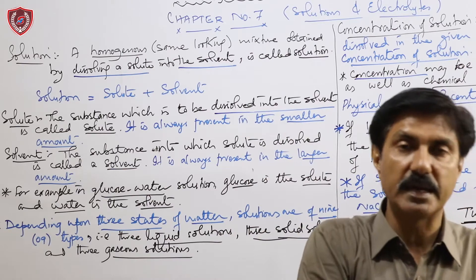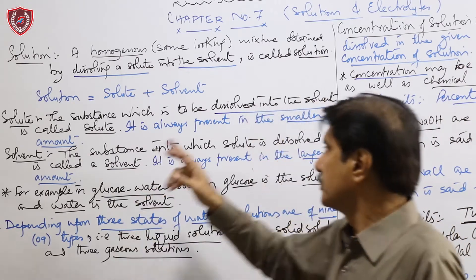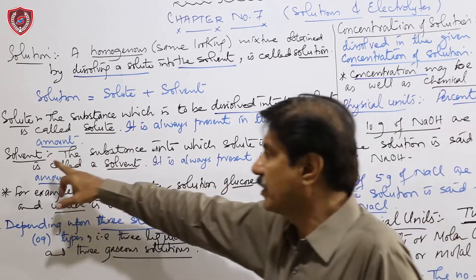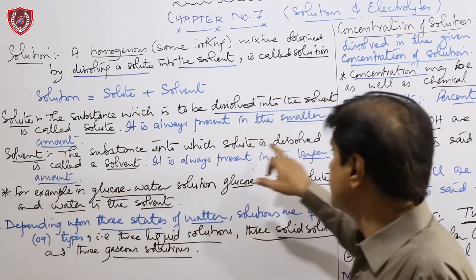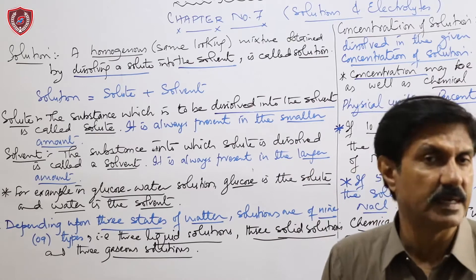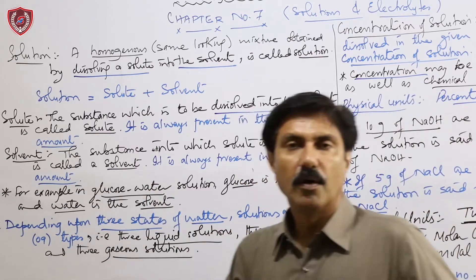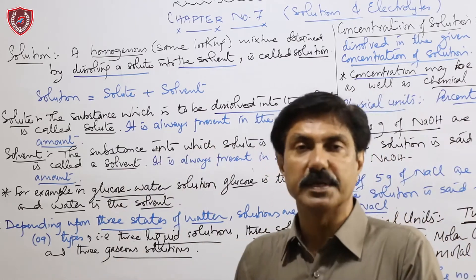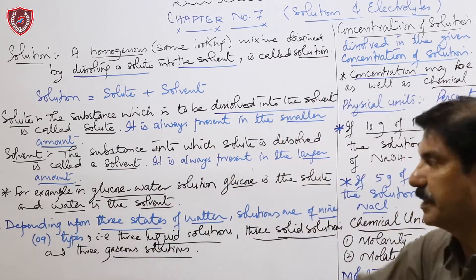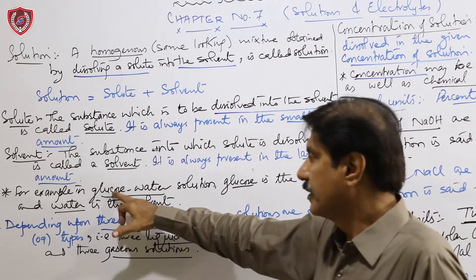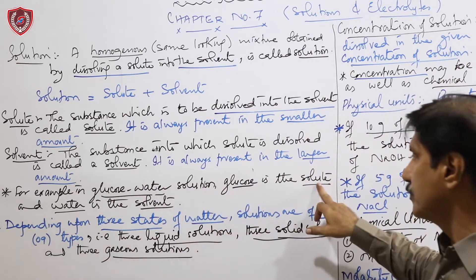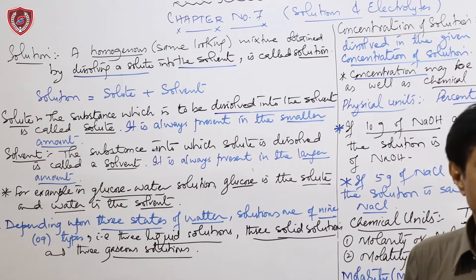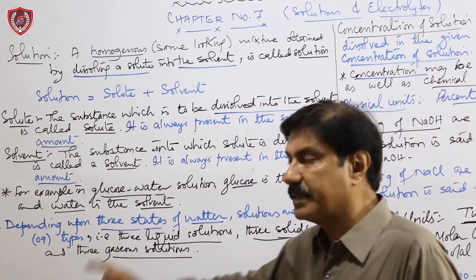Solute is always present in the smaller amount. Solvent وہ چیز ہے جس میں solute کو ڈال کے dissolve کیا جائے — it is present in the larger amount. مثال: گلوکوز کو پانی میں ڈال کے solution بنایا تو گلوکوز کا کام solute کا اور پانی کا کام solvent کا ہے۔